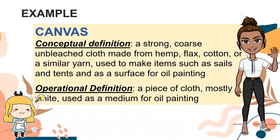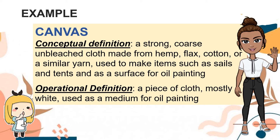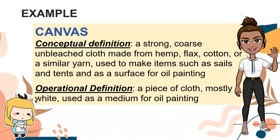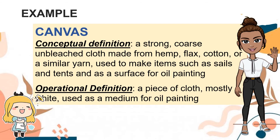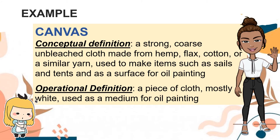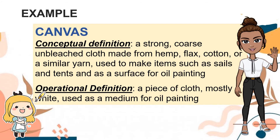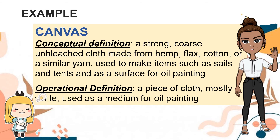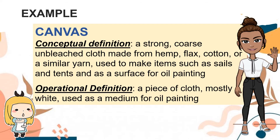Another example: 'canvas.' For its conceptual definition, it is a strong, coarse, unbleached cloth made from hemp, flax, cotton, or a similar yarn, used to make items such as sails and tents and as a surface for oil painting. Its operational definition is a piece of cloth, mostly white, used as a medium for oil painting.